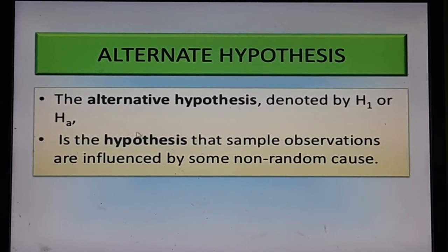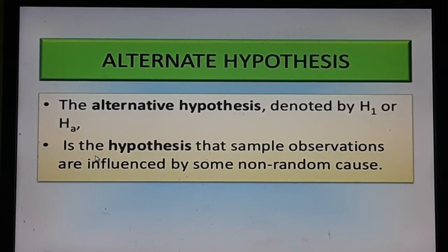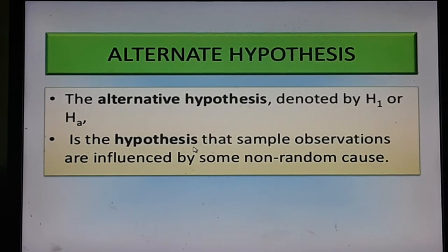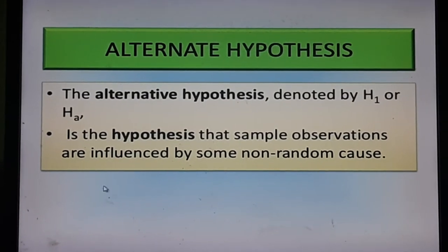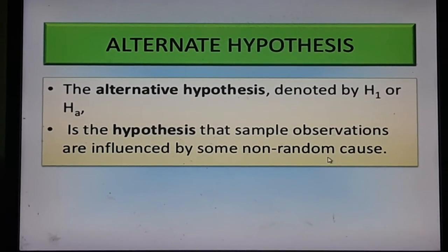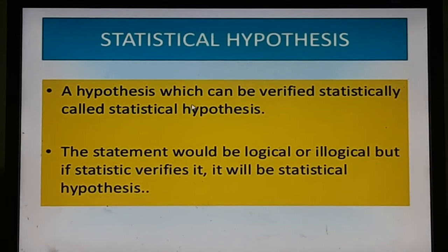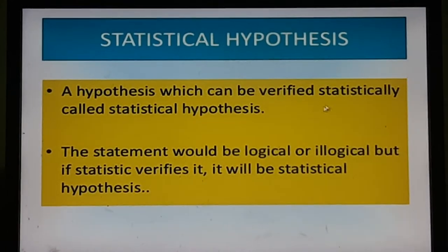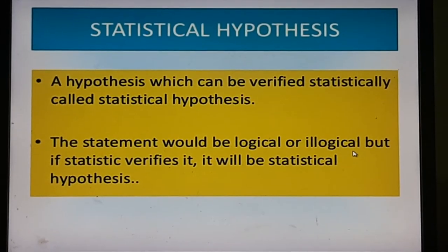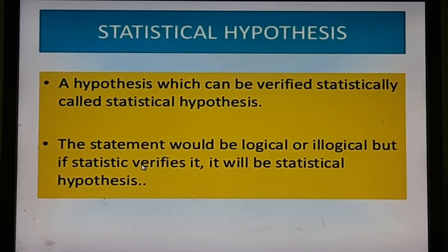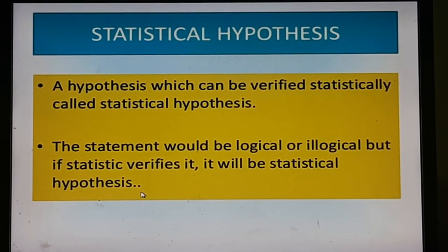The alternate hypothesis, denoted by H1 or HA, is the hypothesis that sample observations are influenced by some non-random cause. Statistical hypothesis is a hypothesis which can be verified statistically. The statement would be logical or illogical, but if a statistic verifies it, it will be called a statistical hypothesis.